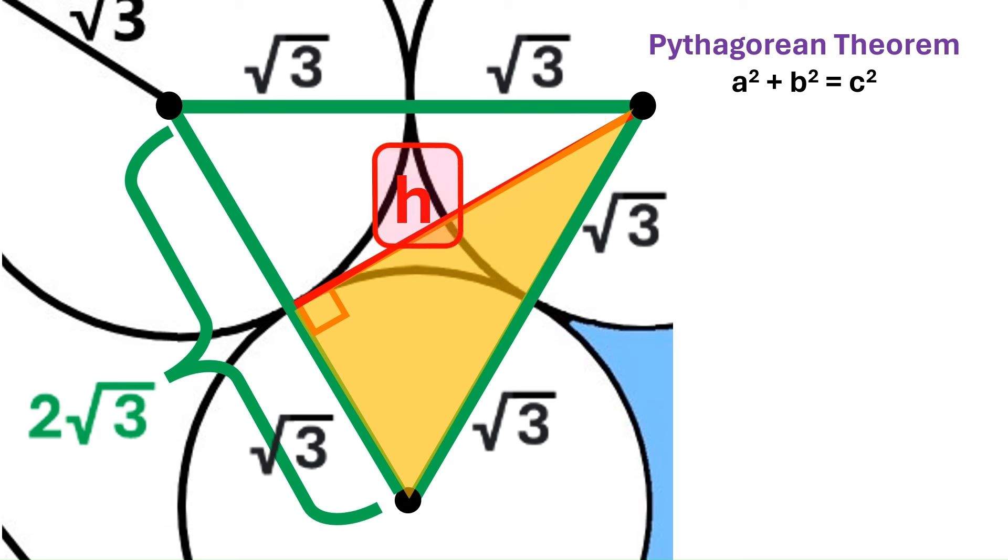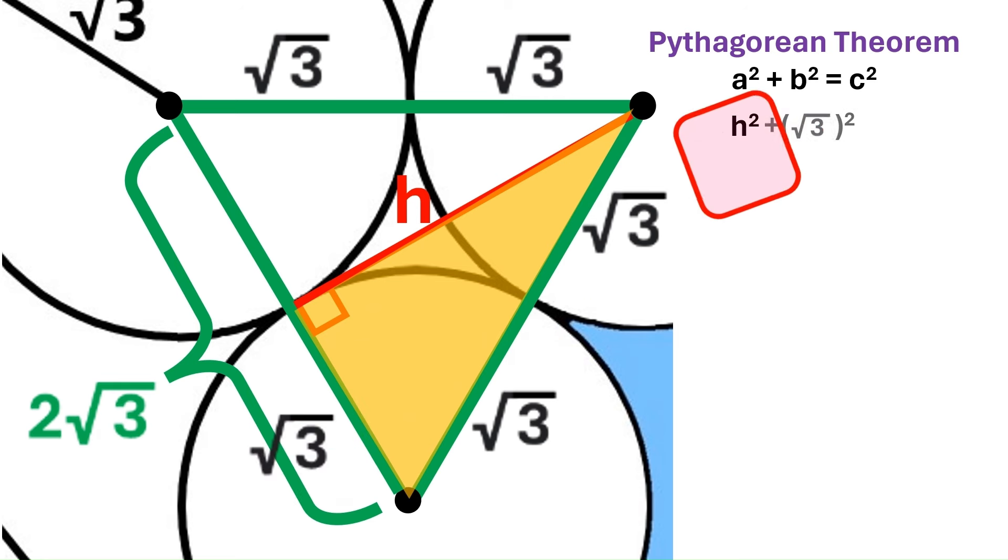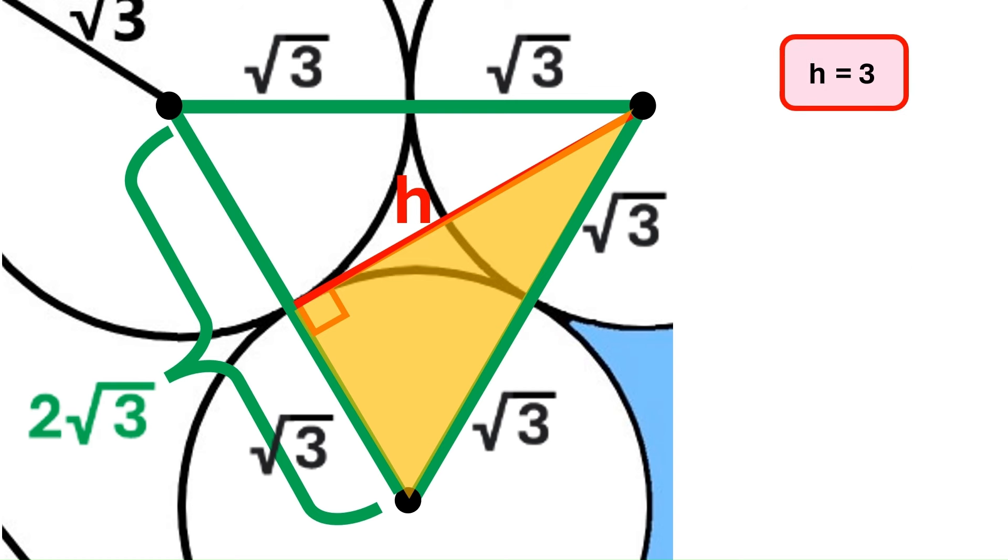Now, H is one of the short sides of this right triangle, so let's take its square. The other short side is radical 3, so let's take its square too. And the longer side is 2 times radical 3. We'll take its square as well. The square of radical 3 is 3, and the square of 2 times radical 3 is 12. That means H squared is 9, and consequently H is 3. Let's keep this finding up here and change this to 3.